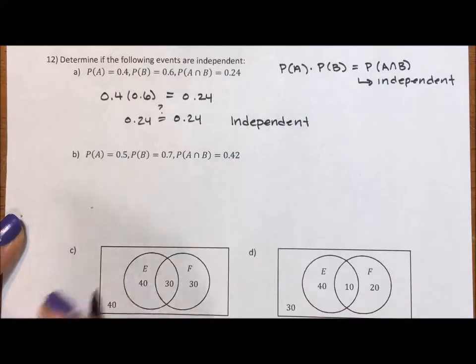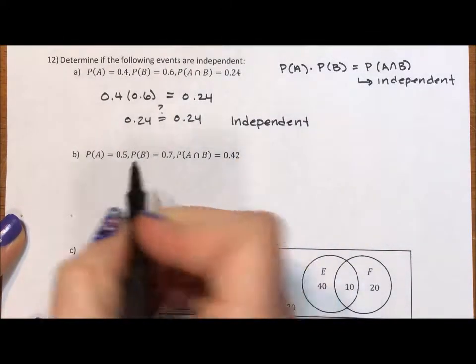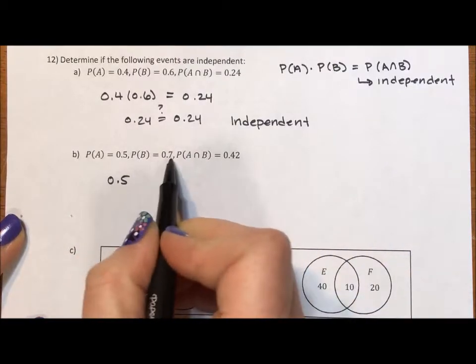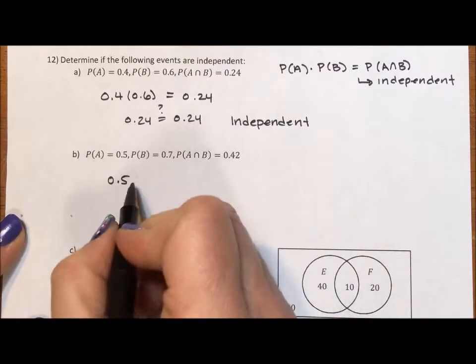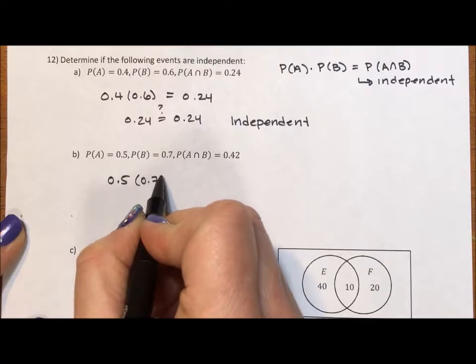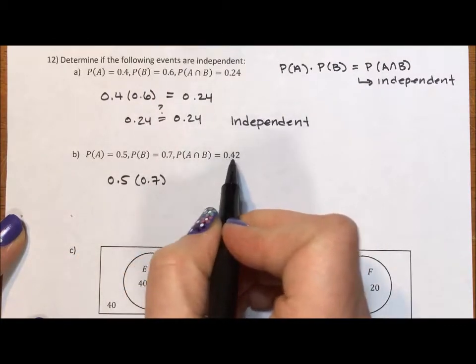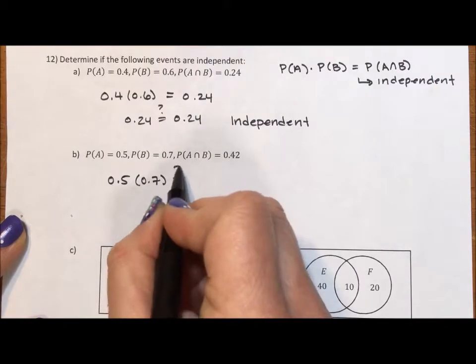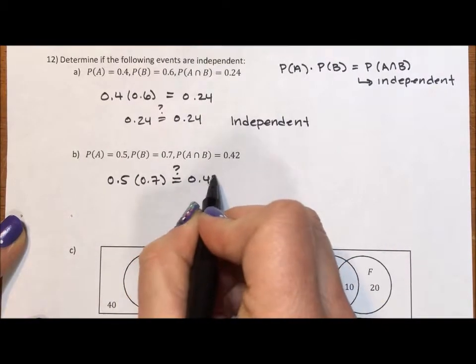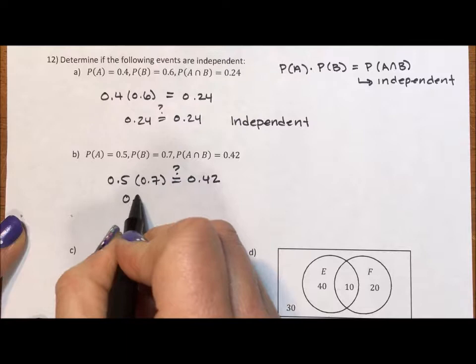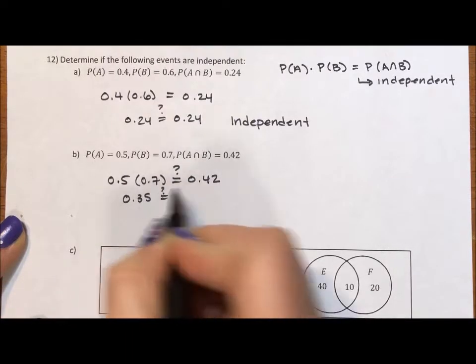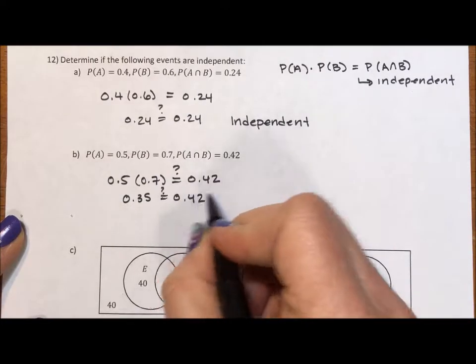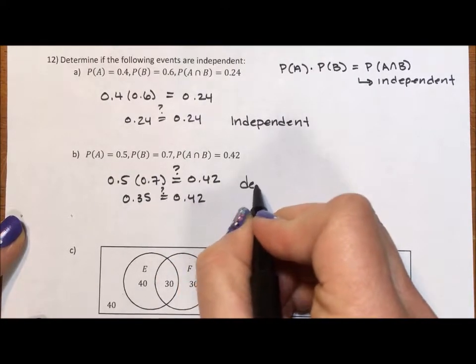For my next set, we have probability A is 0.5, the probability of B is 0.7, and the intersection is 0.42. So is 0.5 times 0.7 equal to 0.42? Is 0.35 equal to 0.42? That's a big no. So these two events are dependent.